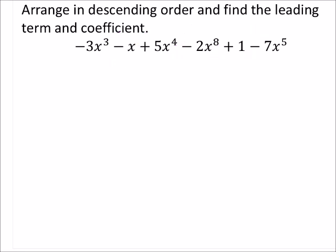Let's identify where our highest degree is. We're just looking at powers or exponents of the variables. We got an exponent of 3, 1, 4, 8, 0, and 5. So our highest degree here is this negative 2 times x to the power of 8.